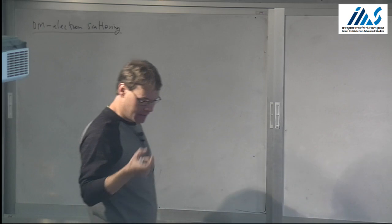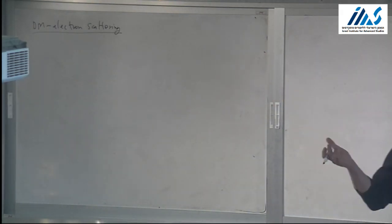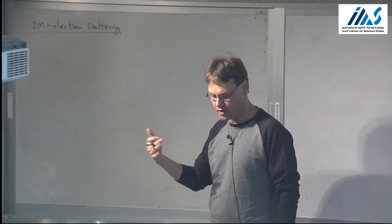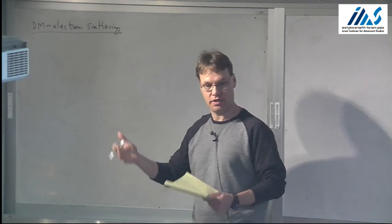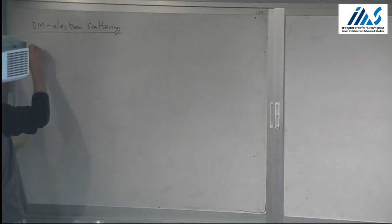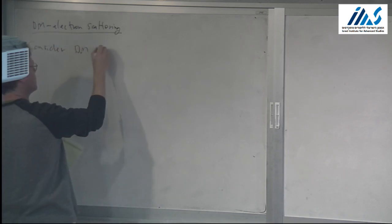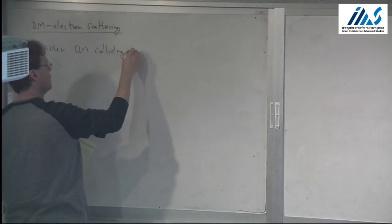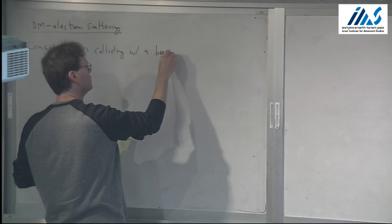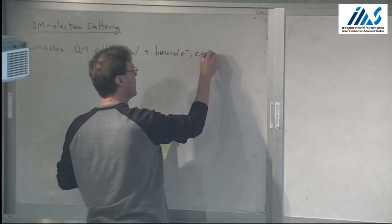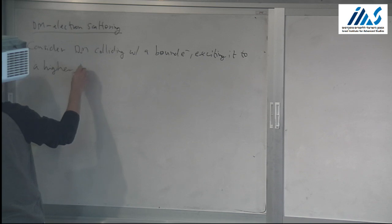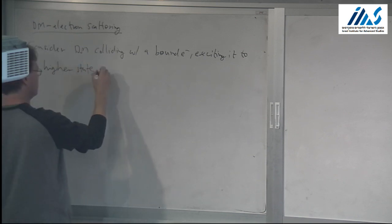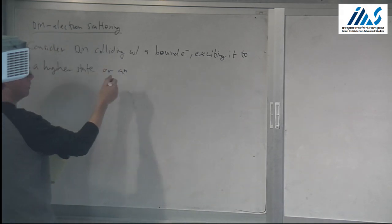Let's imagine that we have an electron that's bound in some state in some atom. We want to calculate what's the typical energy that we transfer when the dark matter hits the electron and excites it to some higher state or ionizes the atom. Let's look at the kinematics of that. Consider dark matter-electron scattering — dark matter colliding with a bound electron and exciting it to some higher state, which could be a higher level or an unbound state.